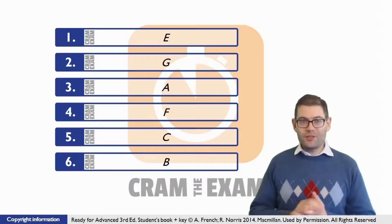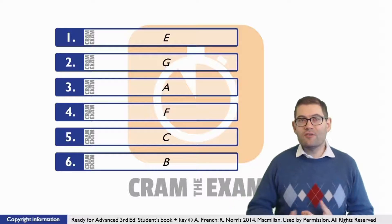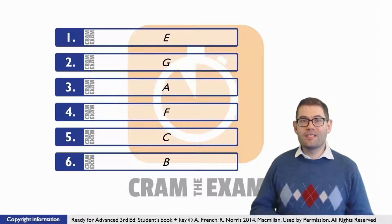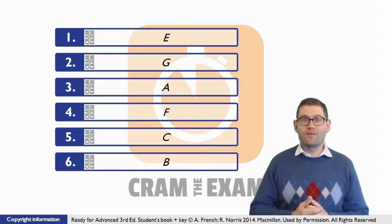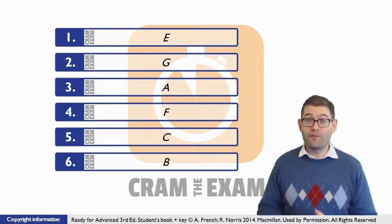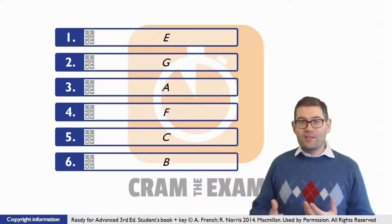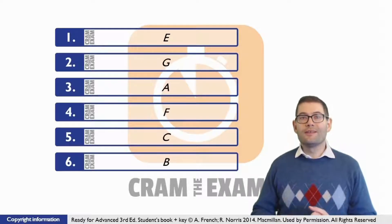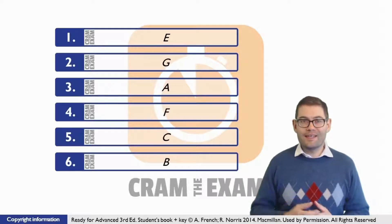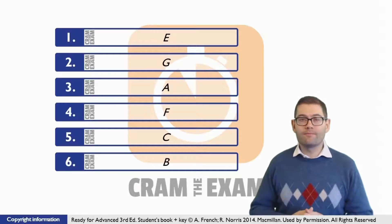For question two, the answer is G. G further continues Stephen's analysis of the family sitting in front of him. 'They' at the beginning of G refers to the fidget bottom family. The end of G — 'the situation called for action' — directly connects to the action described in the main text after G.